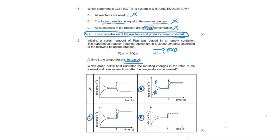Le Chatelier's principle says the system will favor the direction that opposes the change. By increasing temperature, the system favors the endothermic direction — which is the reverse reaction — so the rate of the reverse reaction increases more than the forward reaction. This lasts briefly until both re-establish equilibrium. Graph B is correct because it shows both effects: the initial increase in both rates, and the reverse reaction being favored long-term.